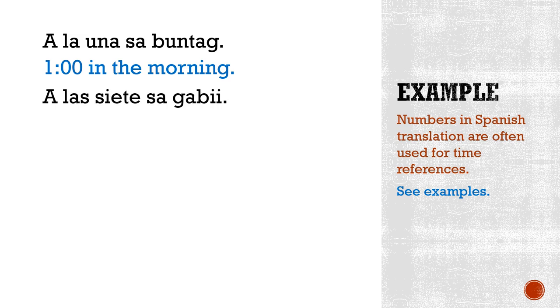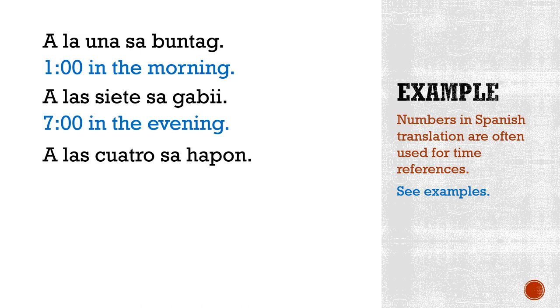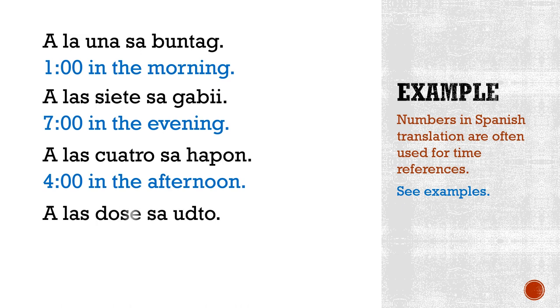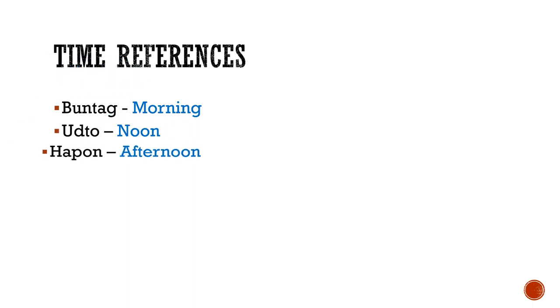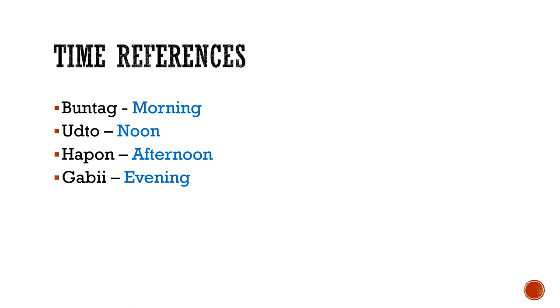Now let's cover time references. Buntag is morning, udto is noon, hapon is afternoon, gabii is evening, tungang gabii is midnight, karon is now, unya is later, ugma is tomorrow, karong adlawa is today, sunod simana is next week, and karong simanaha — or karong simanahuna — means this week.